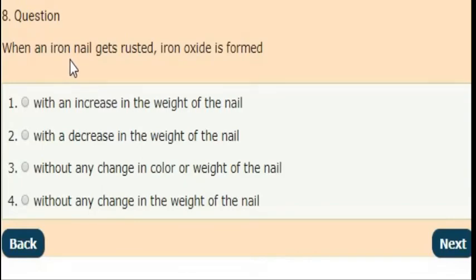Next question: When an iron nail gets rusted, iron oxide is formed. Iron oxide is formed with an increase in the weight of the nail.